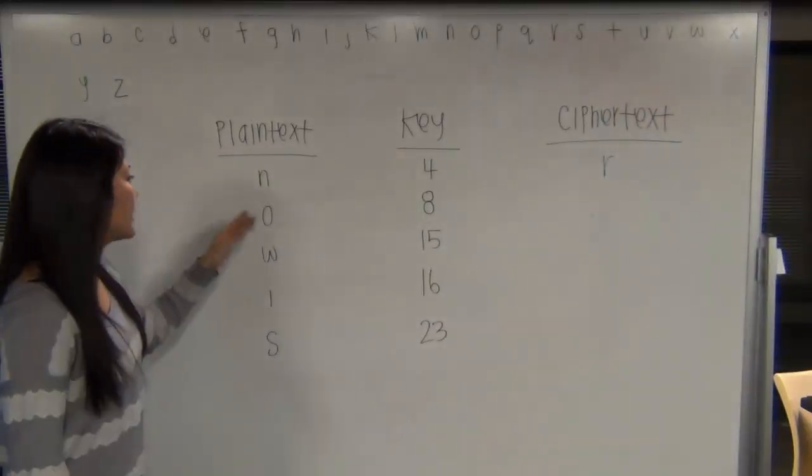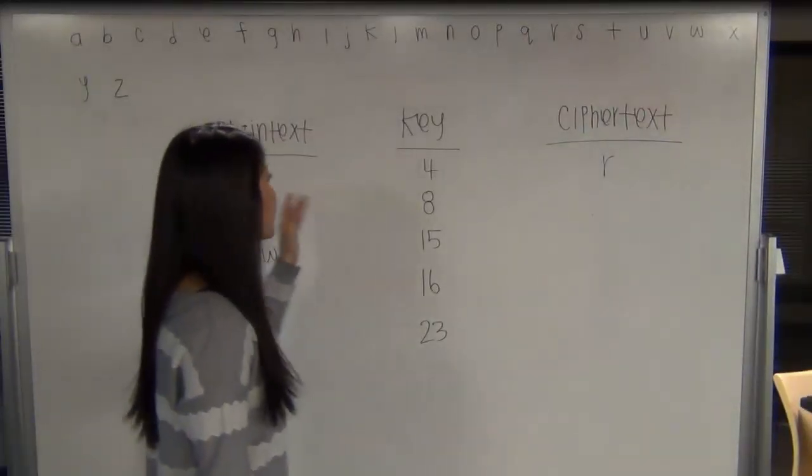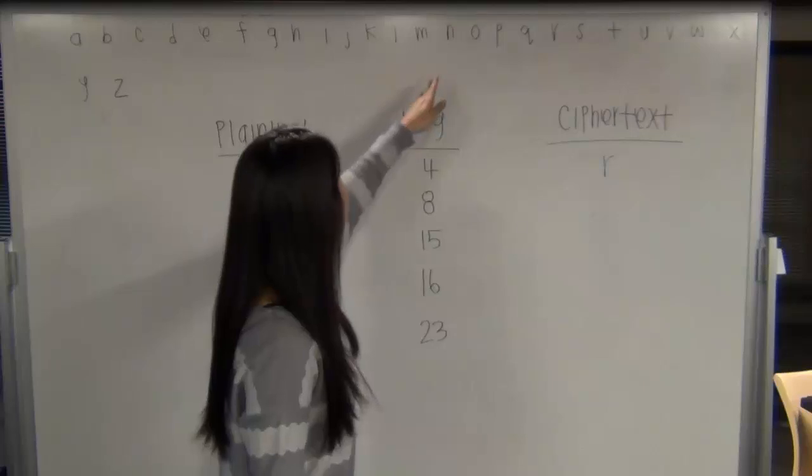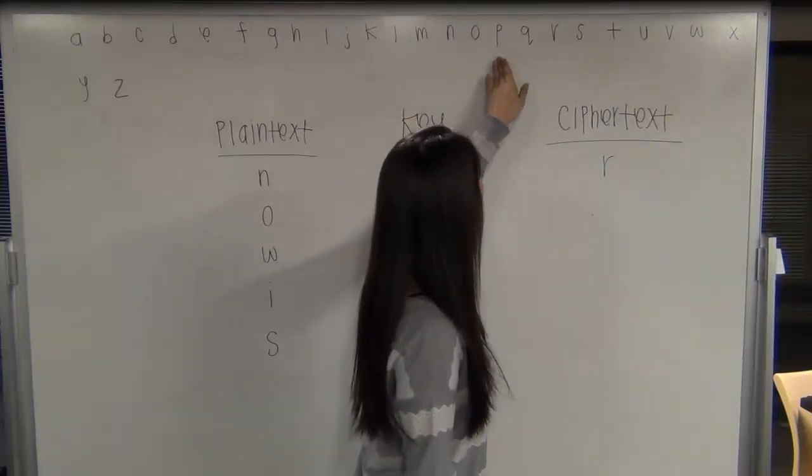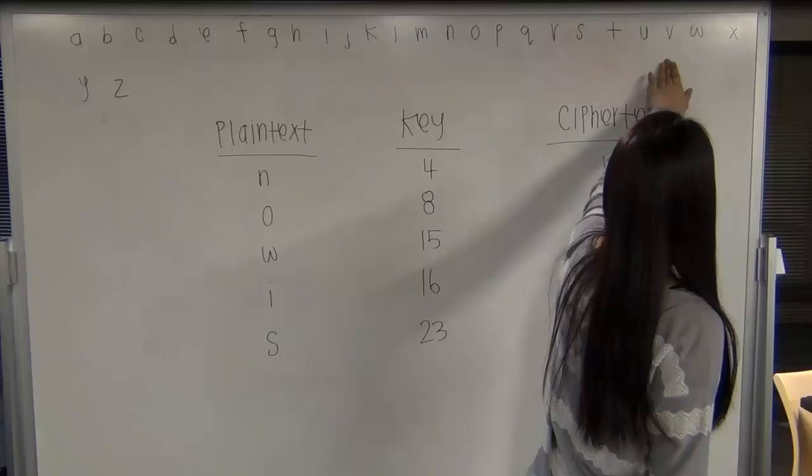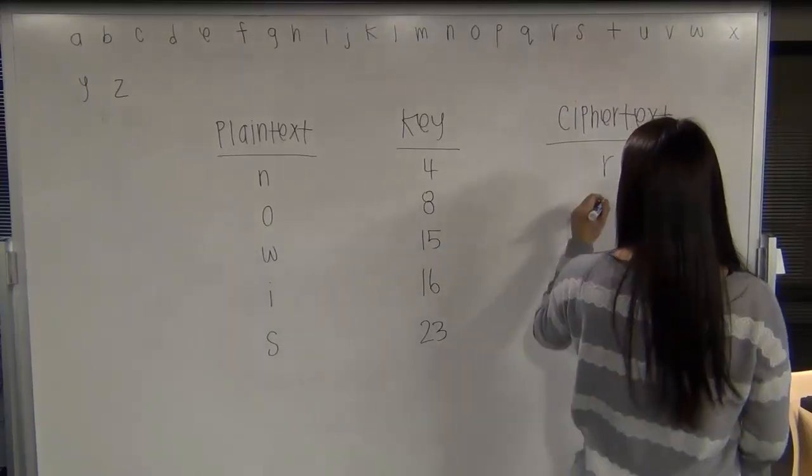Your next plaintext is O and your next key length is 8. So go to O and then move down 8: 1, 2, 3, 4, 5, 6, 7, 8. And you get W.